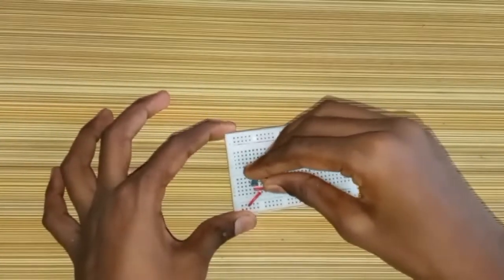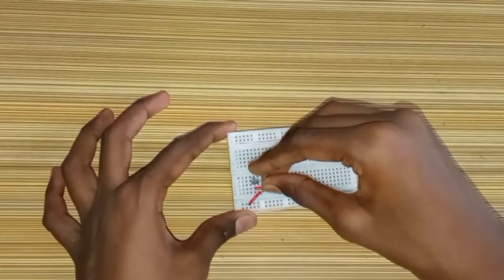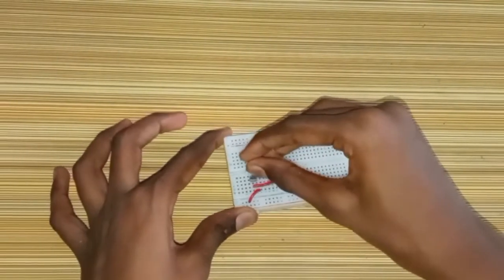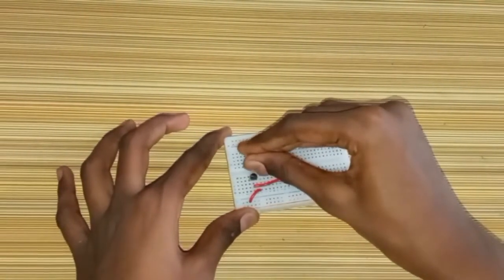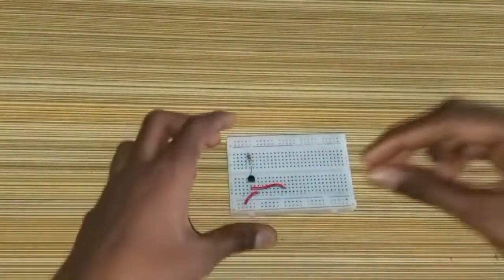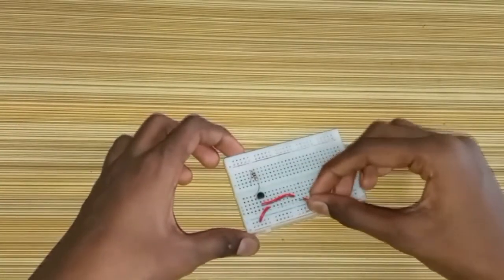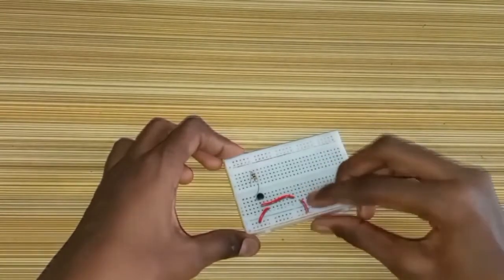Now connect the resistor to the collector of the BC547 transistor. Take another wire and connect it from the positive rail of the breadboard.